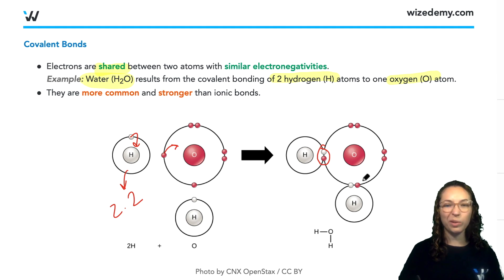I say almost equally because since the electronegativity of oxygen is a little bit higher than that of hydrogen, the oxygen will actually pull those electrons a little bit closer to itself than hydrogen actually has to its nucleus. But essentially this is a sharing between the two, or a covalent bond.